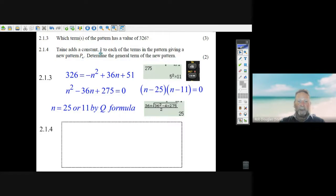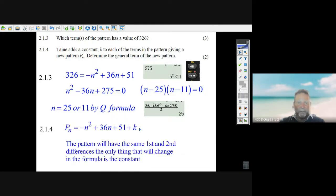Um, adds a constant to each of the terms. How is that going to change the formula? Well, you know, if you add a constant, just add a constant to the formula. Everything else would be the same. If you just added the same number to all the terms, the first and second differences wouldn't change. So that means the formula—the only thing in the formula that would change is you'd have 51 plus k.